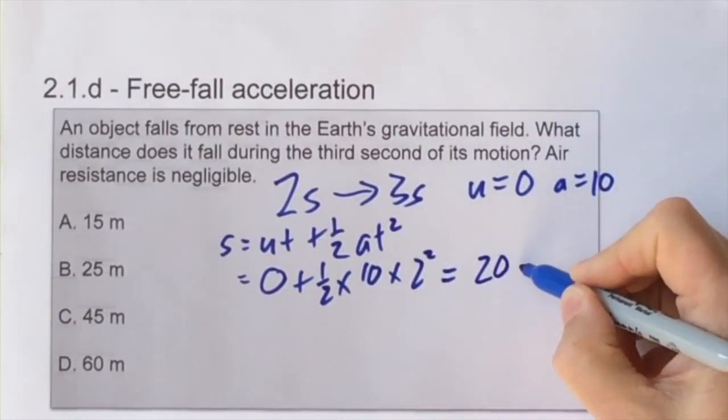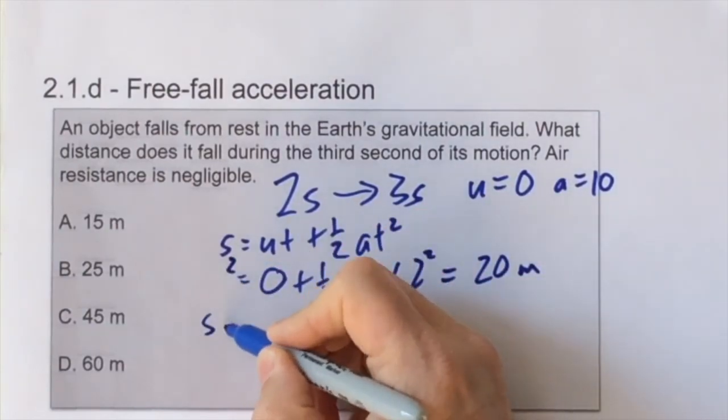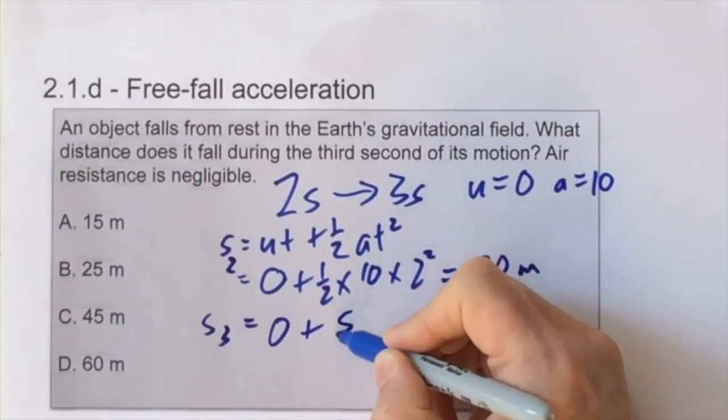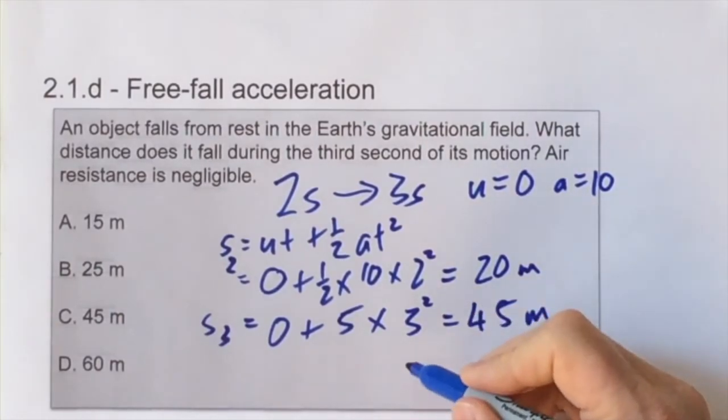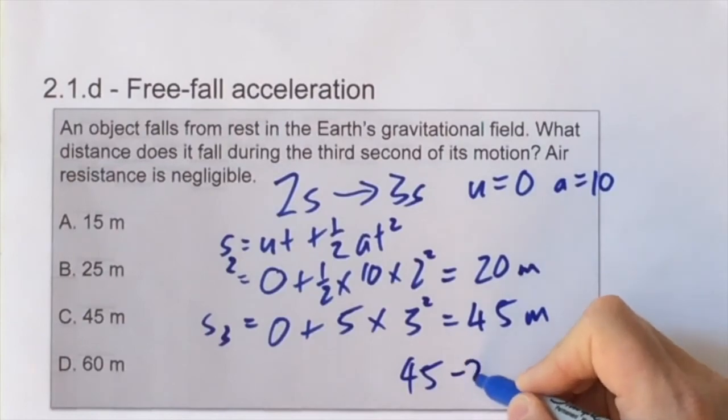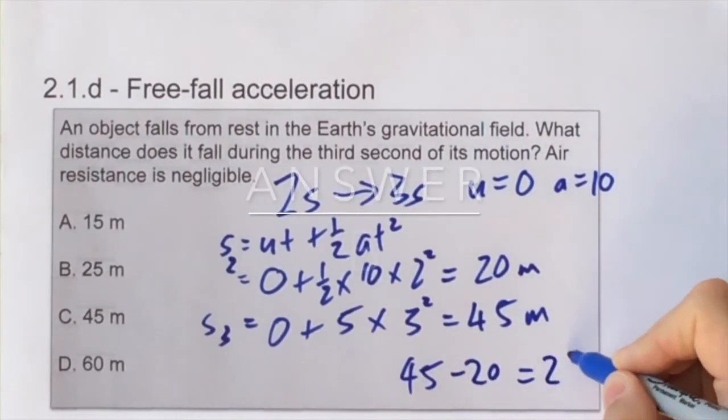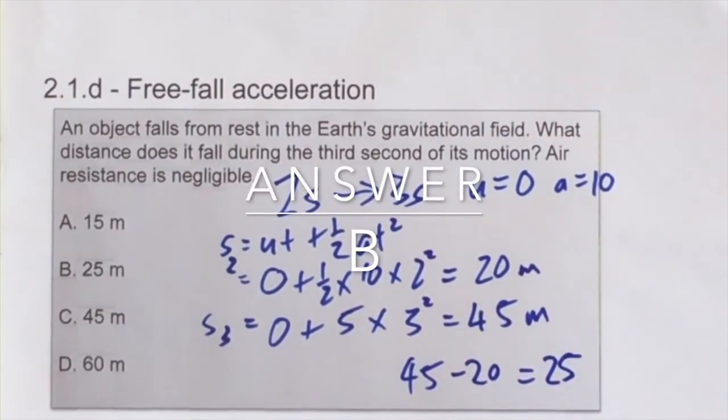Then we look at the distance travelled in the first three seconds, we substitute in and we find that that's 45 meters. But we want to know the distance only in the third second, and therefore we subtract the one distance from the other distance and the answer is 25 meters.